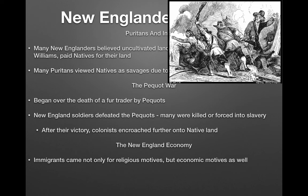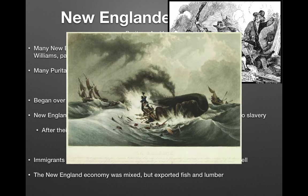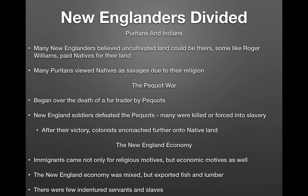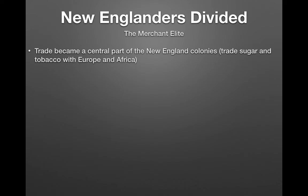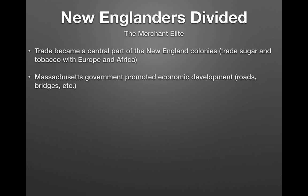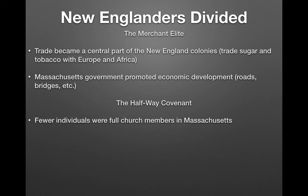Colonists encroached further onto native land after their victory. The New England economy was mixed: some agriculture, significant trade, exports of fish and lumber, and even whale hunting. Immigrants came not only for religious motives but economic ones as well. There were few indentured servants and slaves in New England, although they did exist. The merchant elite made trade a central part of the New England colonies, especially in sugar and tobacco.